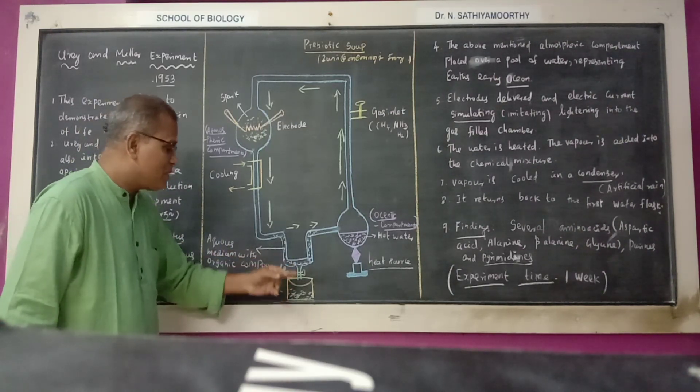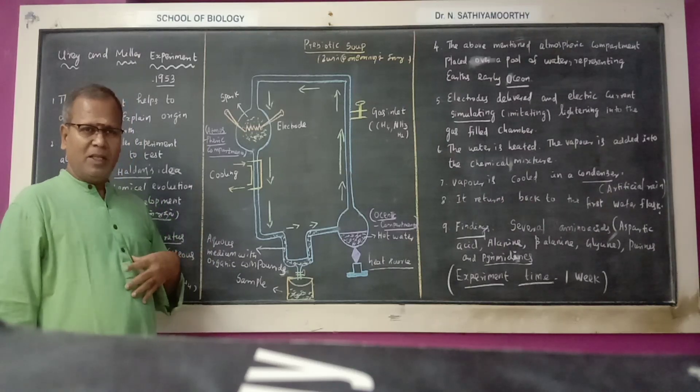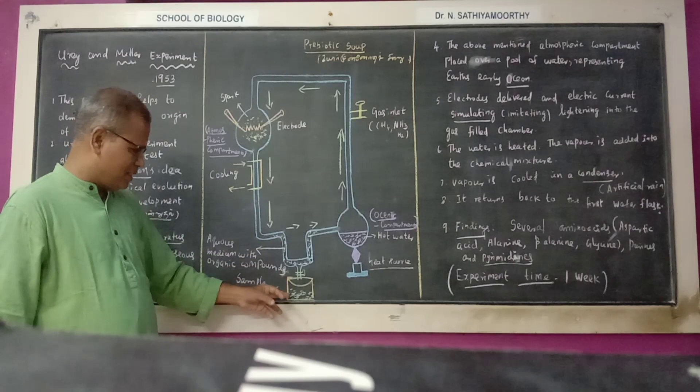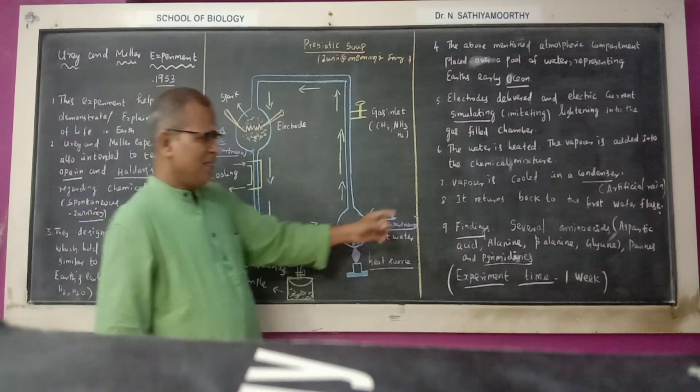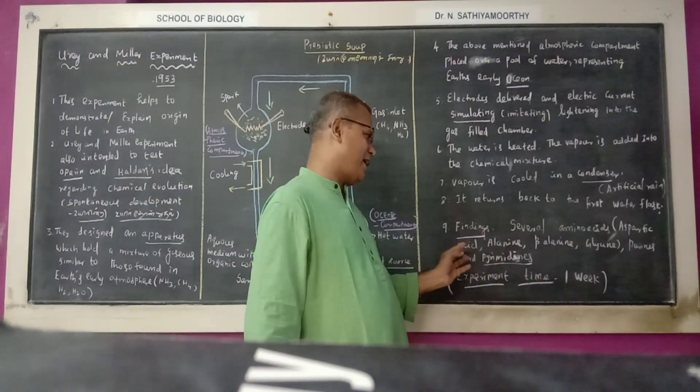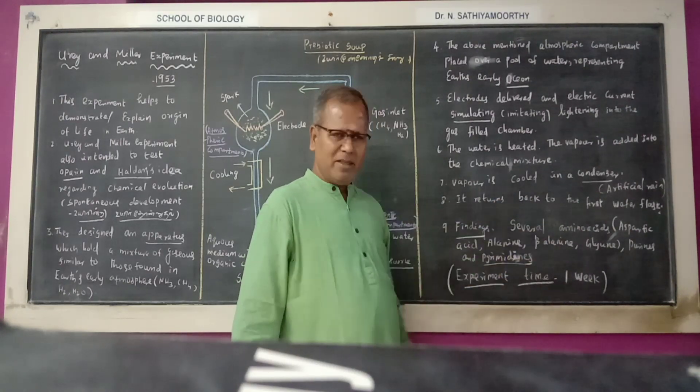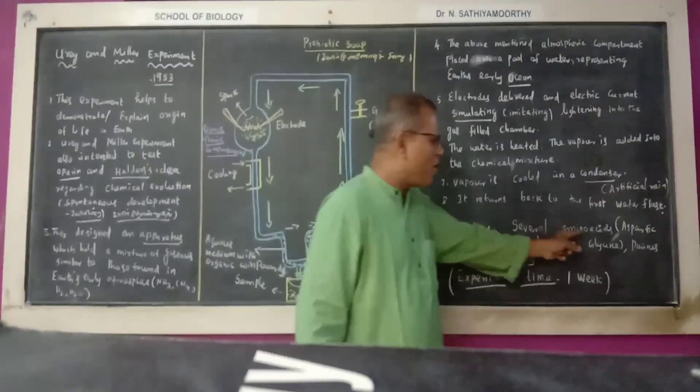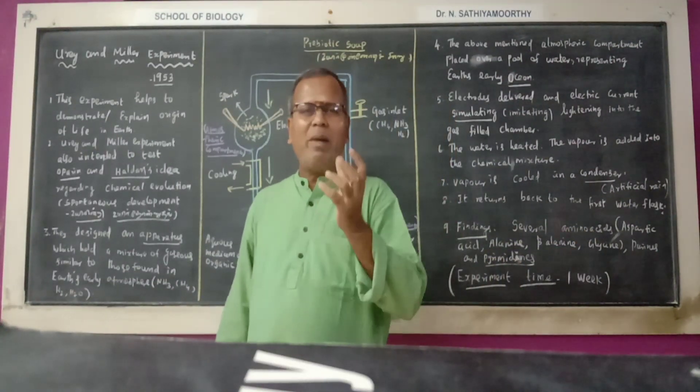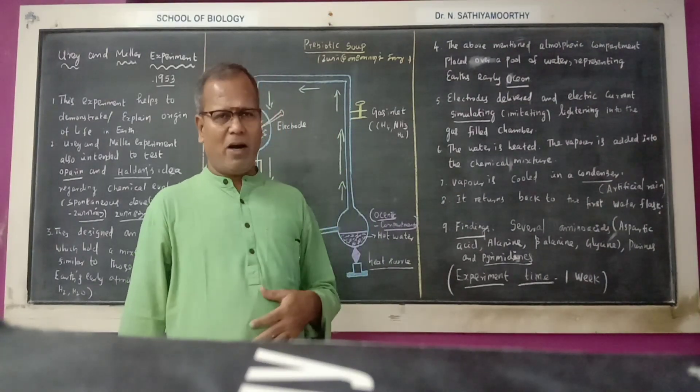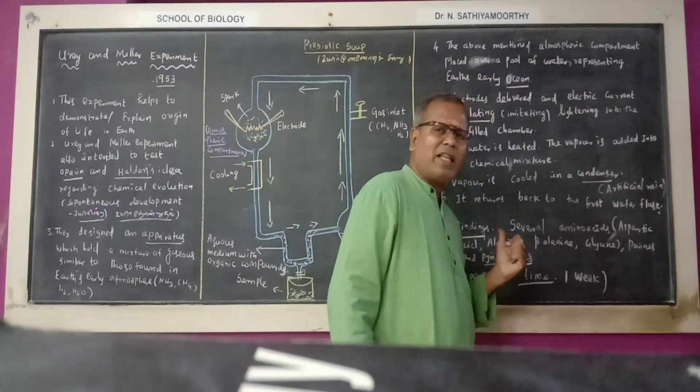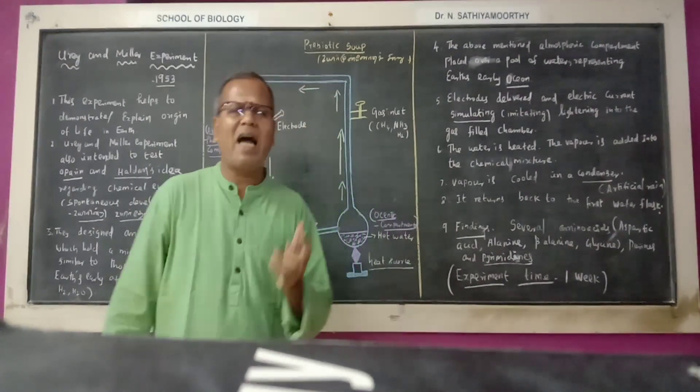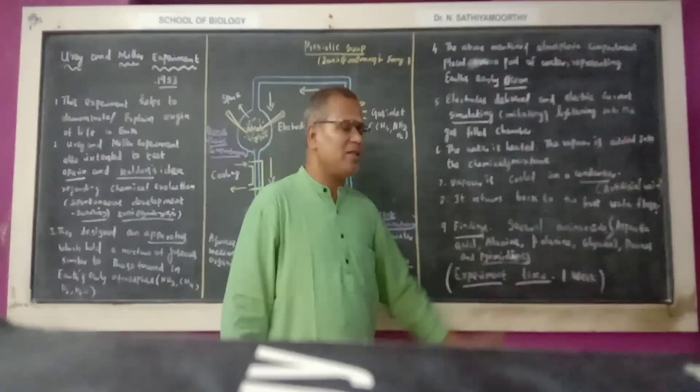Finally these organic compounds are tested. This sample contains several amino acids like aspartic acid, alanine, beta-alanine, glycine and the purines and the pyrimidines. You know the amino acids are the basis of protein. Purines and pyrimidines are the nitrogenous bases present in DNA and RNA: adenine, guanine, thiamine, cytosine, uracil. All these chemicals are found.